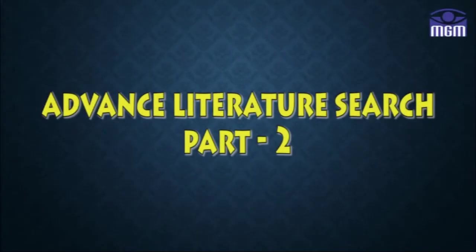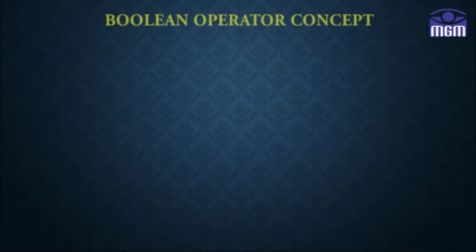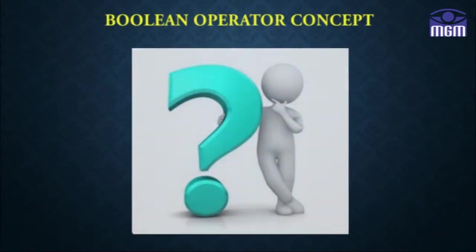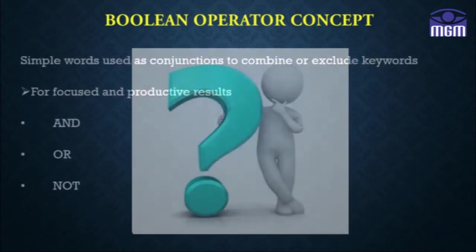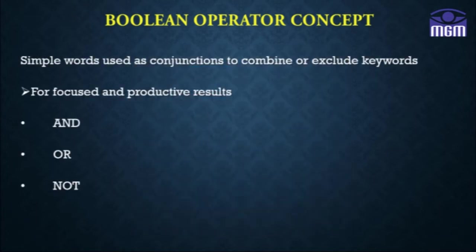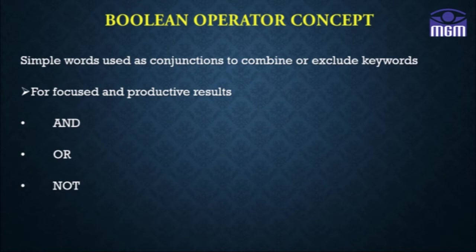Hello and welcome back to this second video on Medical Literature Search. In this video, we will be discussing advanced techniques of literature search and different search tools. Before we move to the search options, let's learn about the important concept of Boolean operators. These are simple words — AND, OR, NOT — which help to combine and exclude keywords, and can be used in different combinations to narrow down search options.